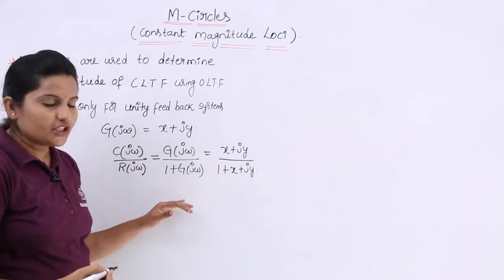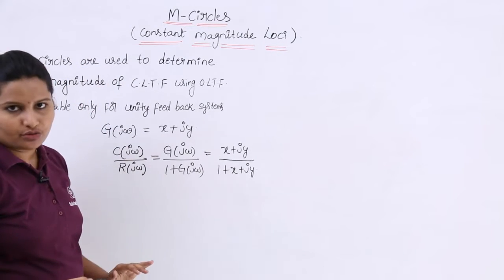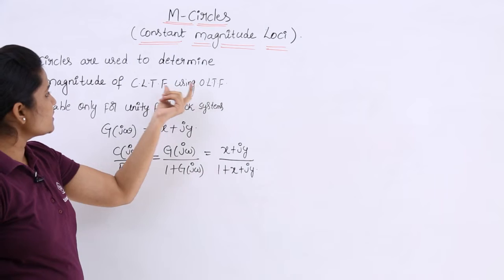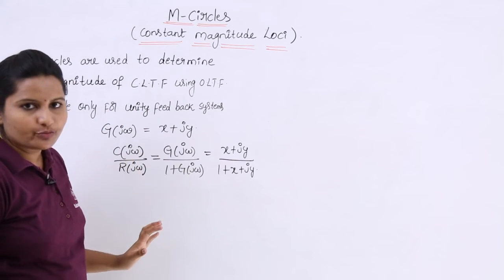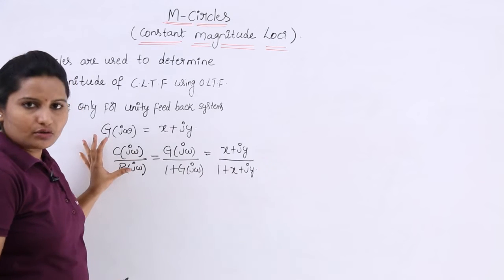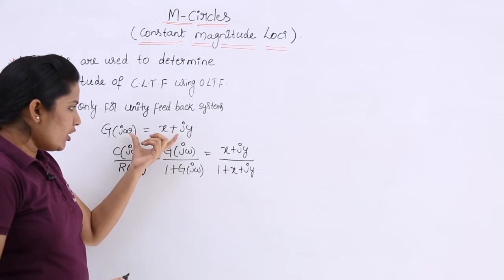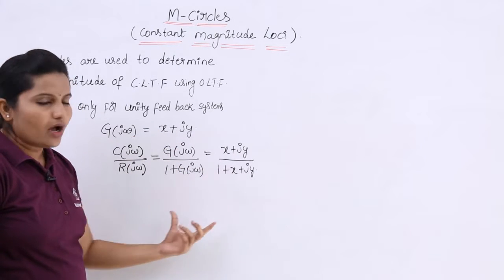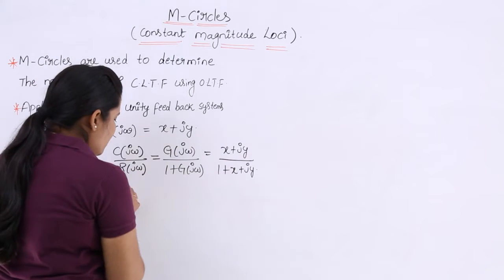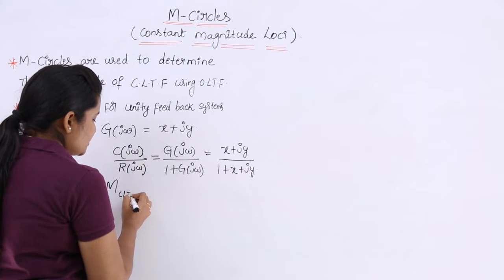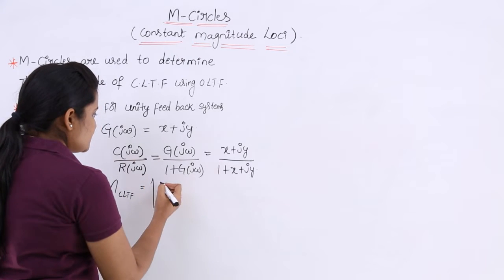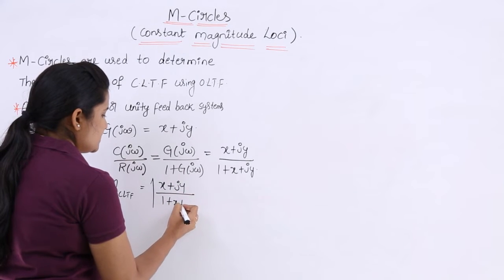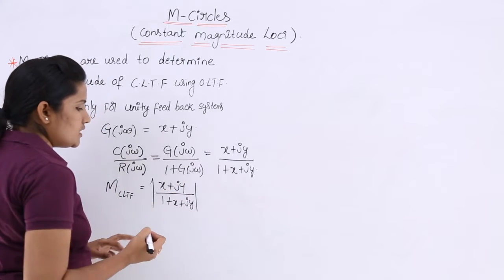We need to find the magnitude from the open-loop transfer function. Using this open-loop transfer function, we are estimating the magnitude of the closed-loop transfer function without knowing the closed-loop function directly. The magnitude is the modulus of (x + jy) divided by (1 + x + jy).